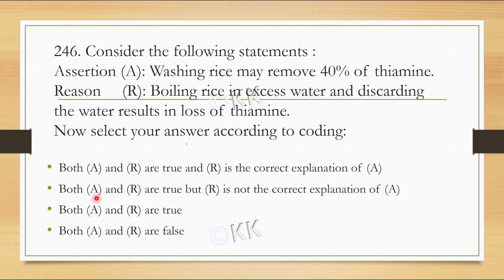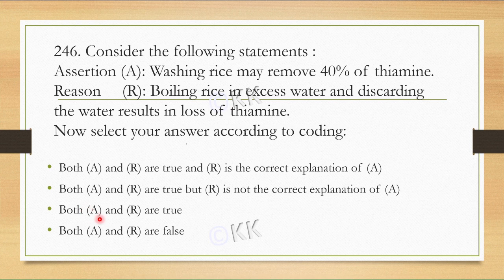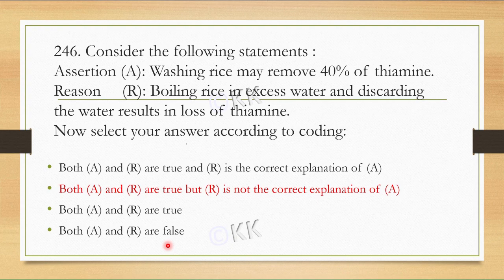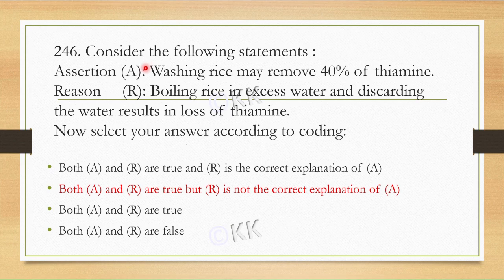Option A: Both assertion and reason are true and reason is the correct explanation of assertion. Option B: Both assertion and reason are true but reason is not the correct explanation of assertion. Option C: Both assertion and reason are true. Option D: Both assertion and reason are false. The correct option is B. Both are true but the reason is not the correct explanation because the assertion is about washing and the reason is about boiling.